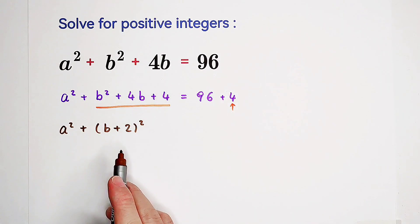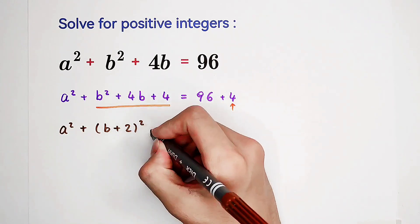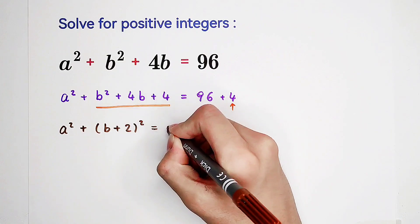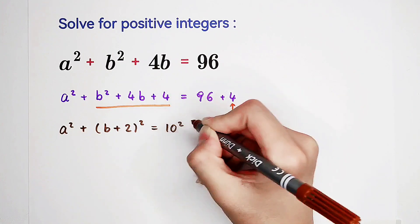So now, the left hand side is the sum of squares, and the right hand side is 100, 10 squared. So what do we do now?